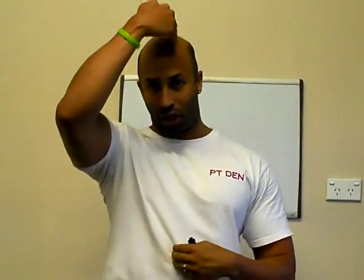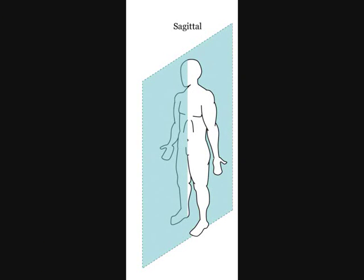The next plane we're going to be talking about is called the sagittal plane. The sagittal plane runs straight down through the middle of the body, separating the body from one half to the other. It doesn't have to sit directly in the middle — it can sit slightly to the side, but it does separate the body from one half to another.